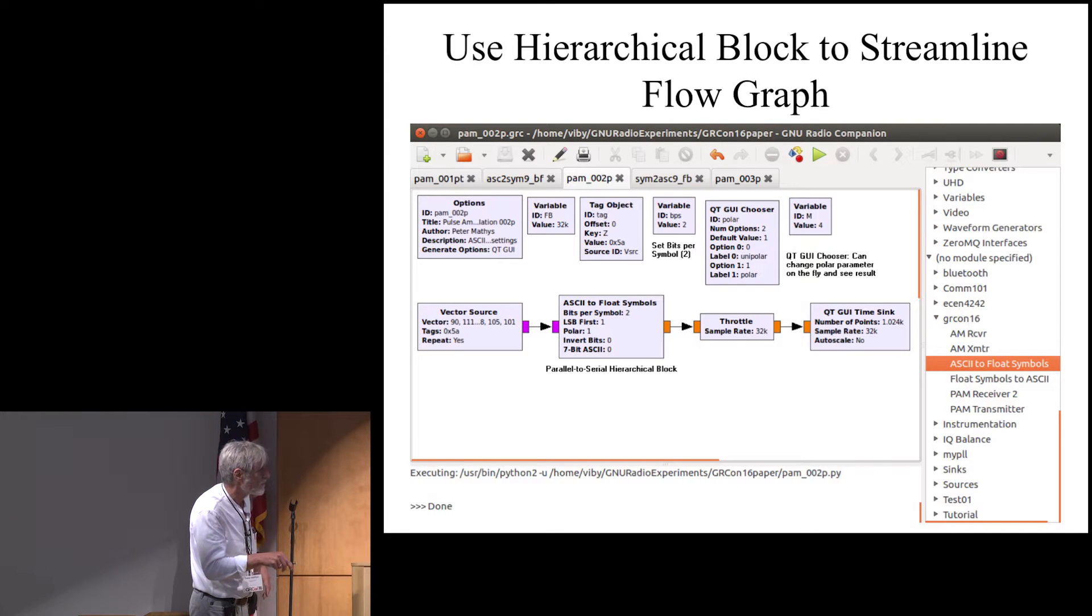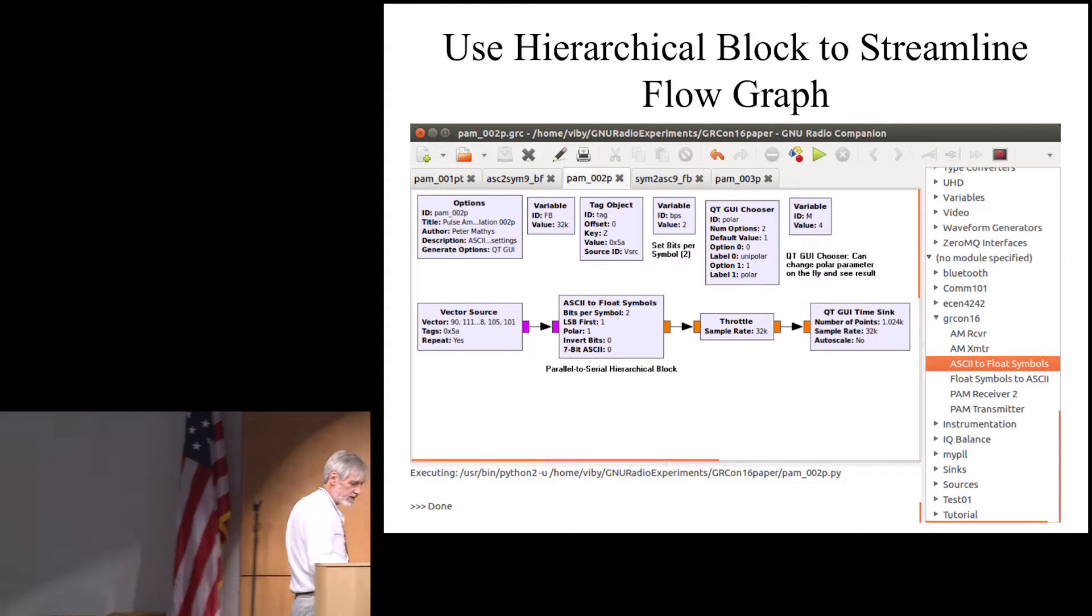Yeah, ASCII to float symbols is the thing that I did here. And so now I have this block here, that's the block that I created myself with my specifications. The vector source is still the same as before. I still need the throttle block and I have the oscilloscope to display the results at the end.